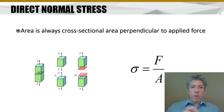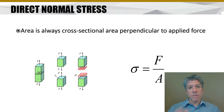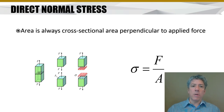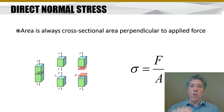The direct normal stress is called normal stress because the direction of the stress is always perpendicular to the applied force. Force is a vector with magnitude and direction, and stress is also a vector. The symbol sigma is used for stress that is normal to the cut surface.